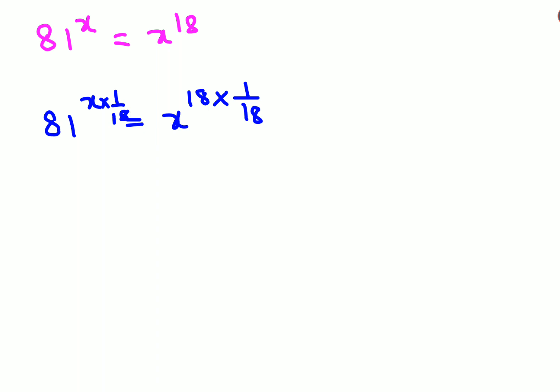So here what will happen is the 18 and 18 gets cancelled and I'm left with 81 raised to 1 upon 18 into x, and here I'm left with just x.